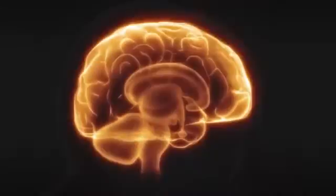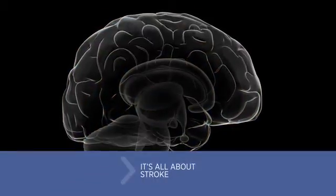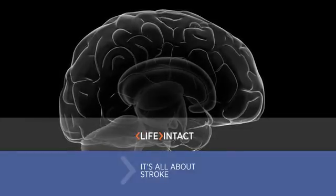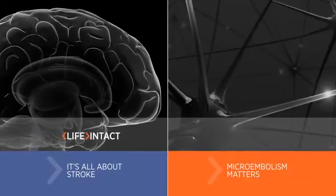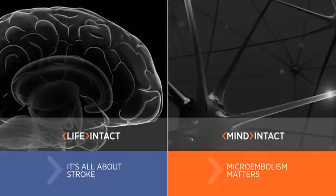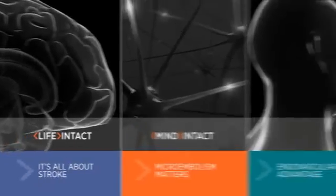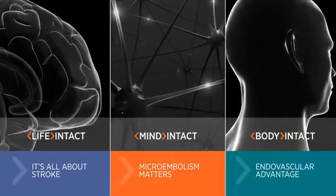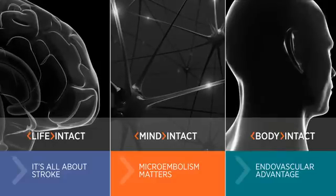The Silk Road procedure offers surgically inspired neuroprotection coupled with a less invasive endovascular stenting approach. The system is designed with one goal in mind: impacting lives by reducing stroke risk. Even the smallest debris may impact the mind's cognitive ability, and with a lower impact on the body, the Silk Road procedure may help get patients on their feet faster.